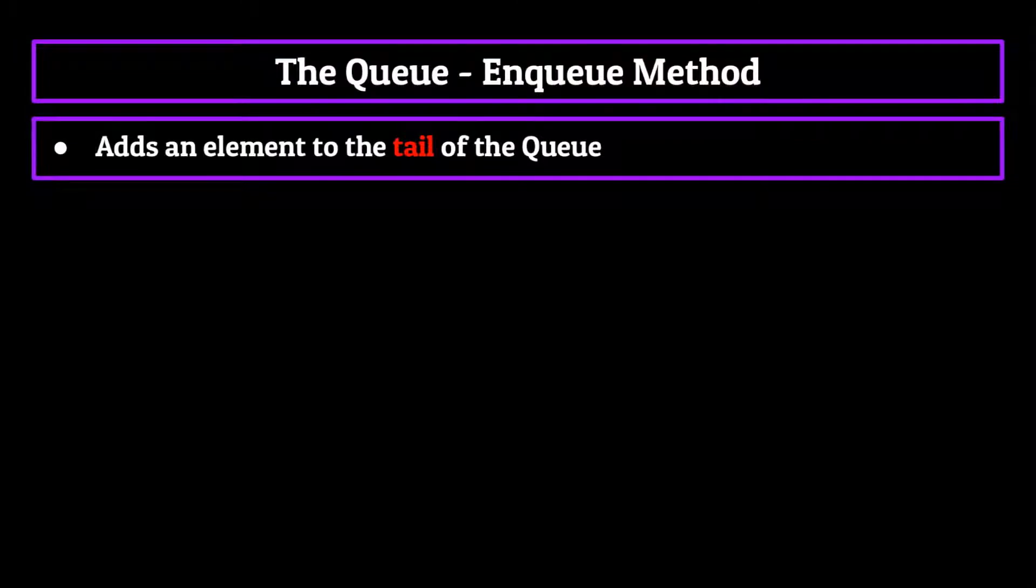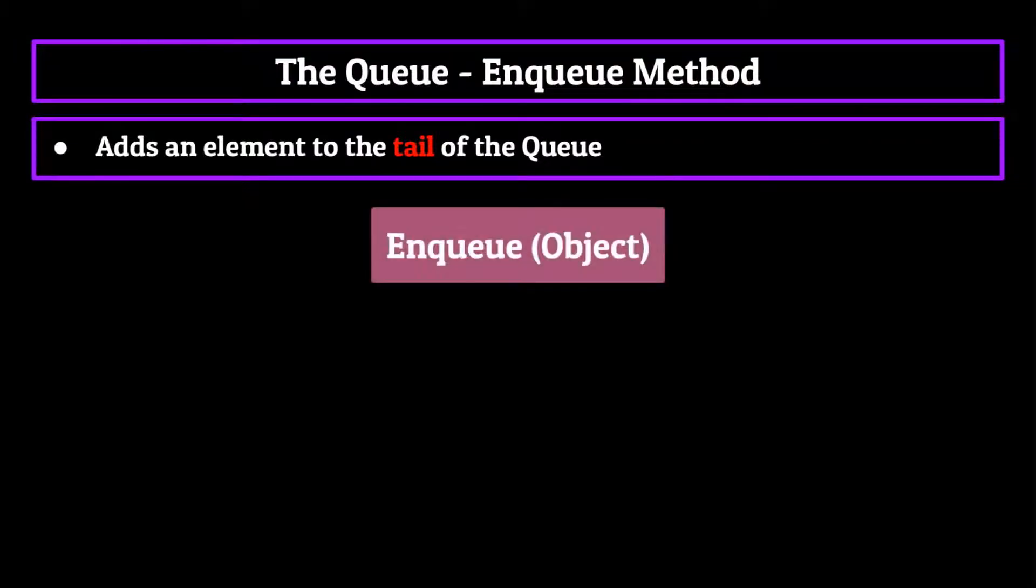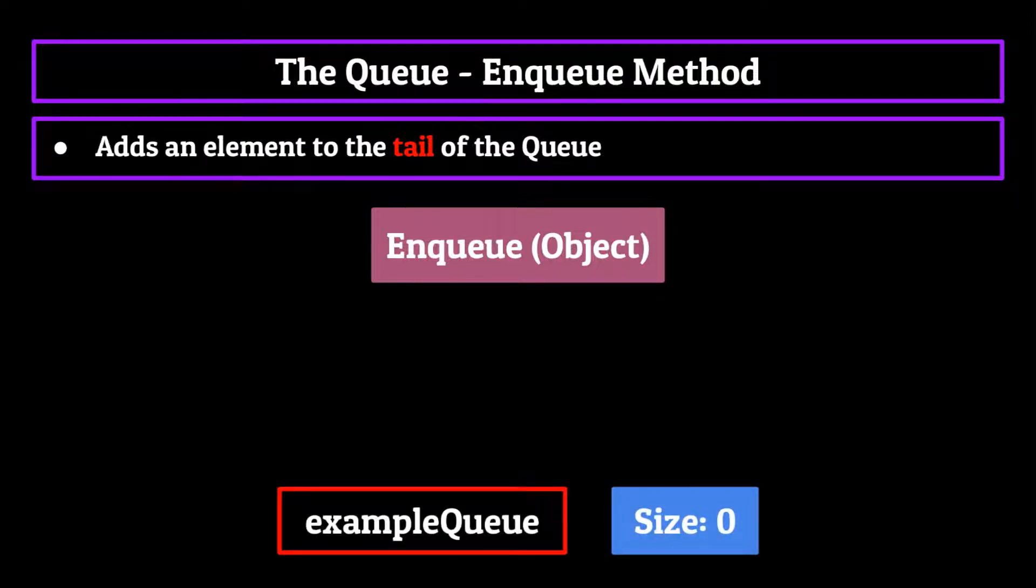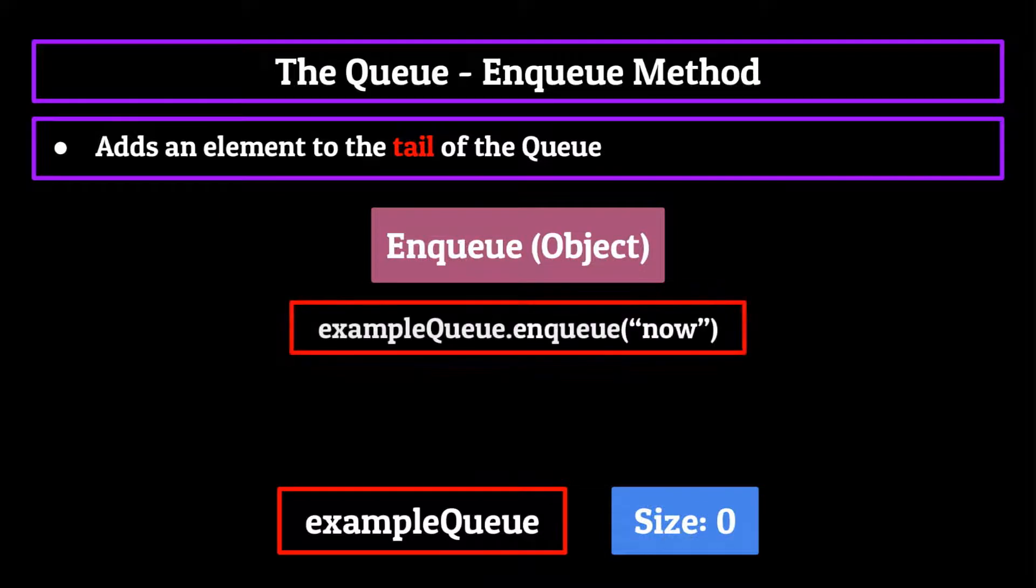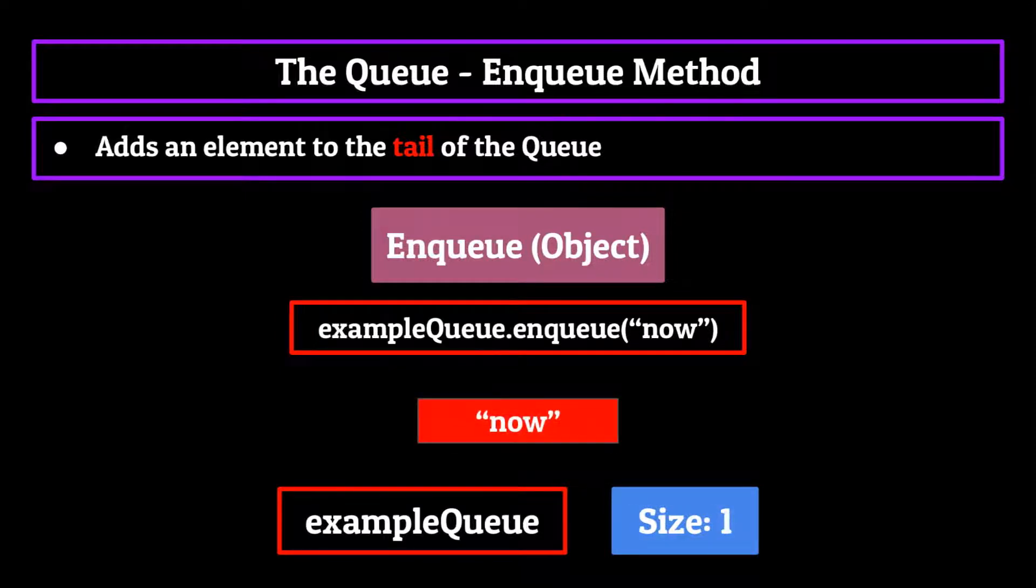Enqueue is the method we use to add elements to the tail of the queue. It takes in an object to put at the end of the queue and simply adds that object while also increasing the size of the queue by one. Let's pull up our example queue, which you can see has a size of zero. But if we called enqueue on a completely random string, let's just say now, the string would be added to the back and the size would increase by one. Now because there's only one element in the queue at this point, the string now is acting as both the head and the tail for us.